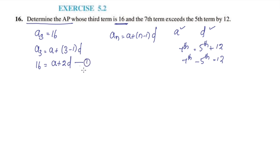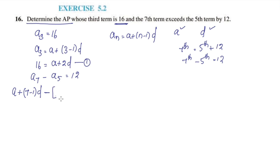For the second equation, A7 = A + (7−1)d = A + 6d, and A5 = A + (5−1)d = A + 4d. So A7 minus A5 equals (A + 6d) minus (A + 4d), which is equal to 12.